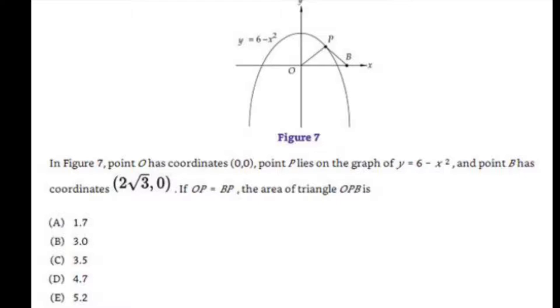In figure 7, point O has coordinate (0,0). Point P lies on the graph of y equals 6 minus x squared and point B has coordinates 2 root 3, 0. If OP equals BP,